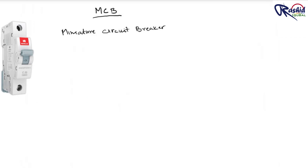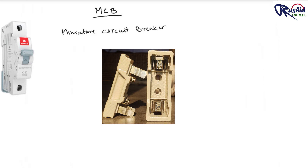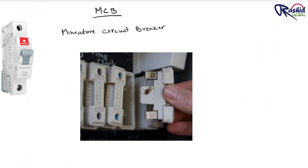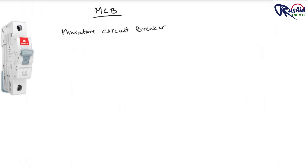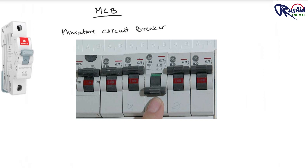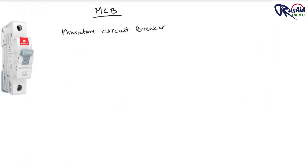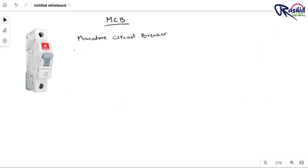Nowadays MCB is a more common and more usable device than fuse. Earlier, fuse was used instead of MCB, but now MCB is being used to replace fuse. MCB is more sensitive to current than fuse, and it is very simple to resume supply — you only need to push the knob back to the on position. But in case of a fuse, the entire fuse needs to be replaced. MCB is also electrically safer than handling a fuse.